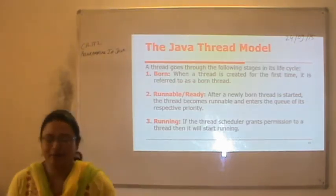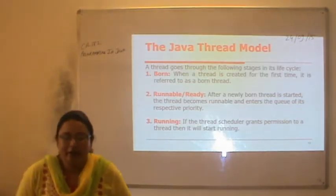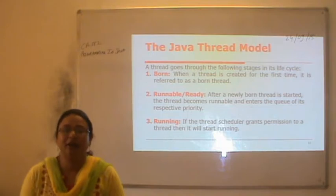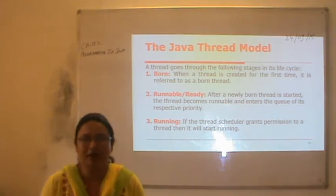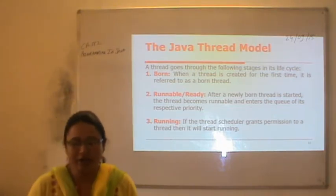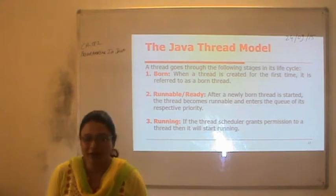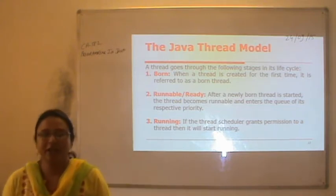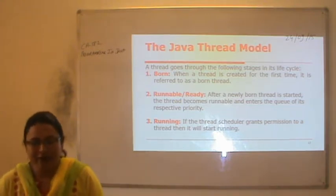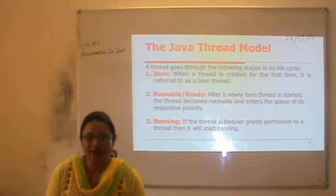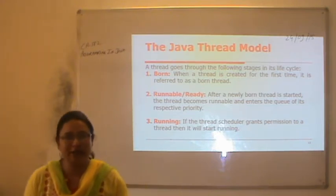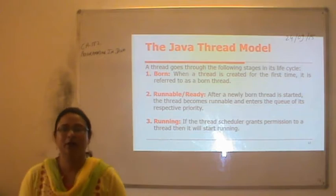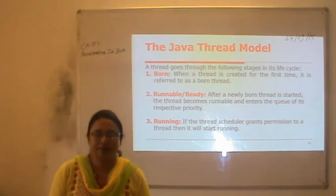Now the Java thread model. In the life cycle of a thread, it goes through different states. The first stage is born. When a thread is created for the first time, it is referred to as a born thread. This is the first stage and it will occur only once in the lifetime of a thread.